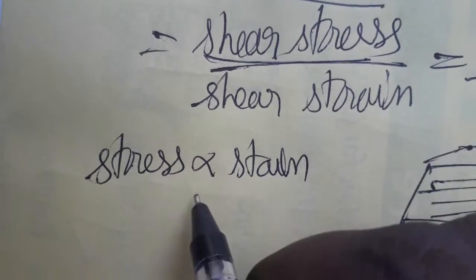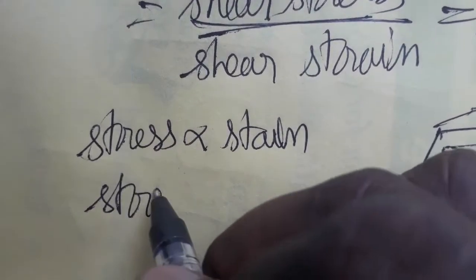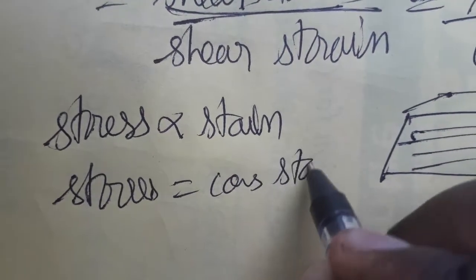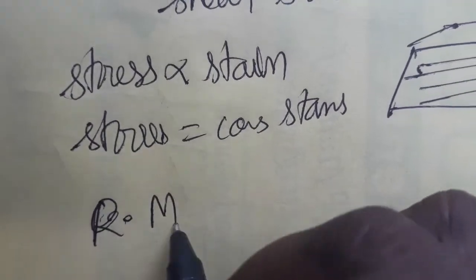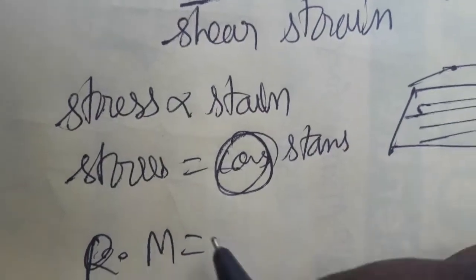Stress is directly proportional to strain according to Hooke's law. Stress is equal to constant times strain. The constant here is rigidity modulus, so rigidity modulus equals stress by strain.